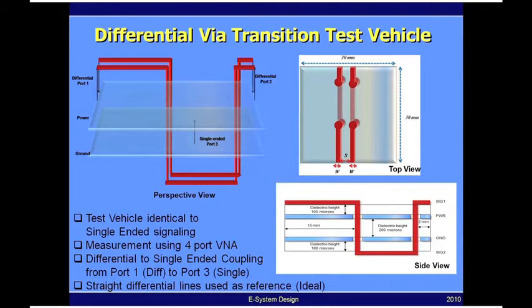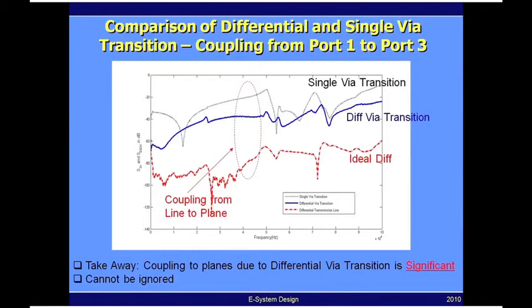The y-axis in this graph represents the level of coupling you would see. So the higher the value in dB, the larger is the coupling. The x-axis represents frequency.